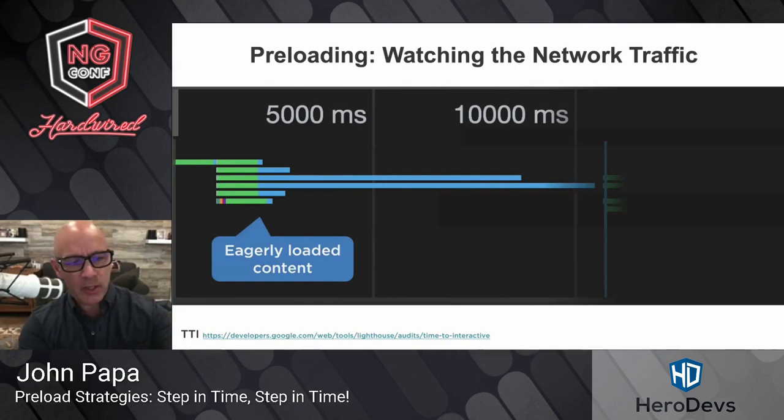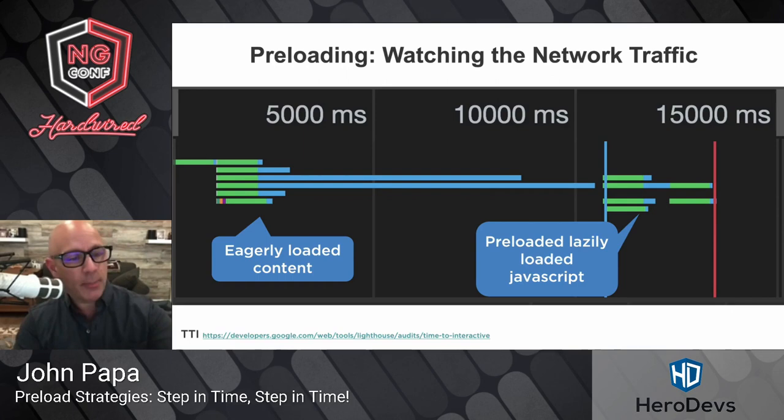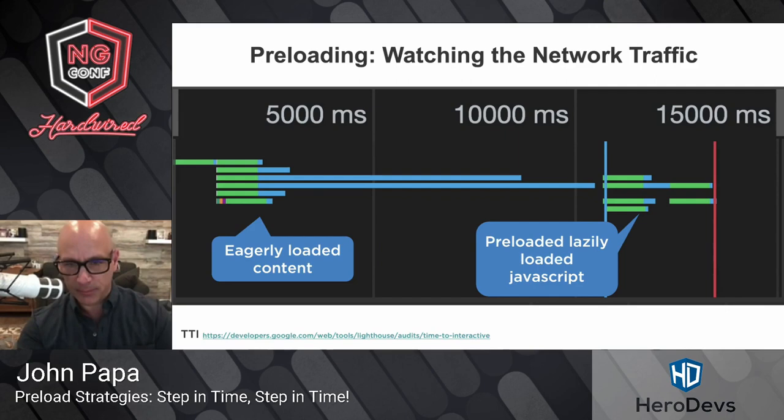So how does preloading work? Eagerly loaded content comes up front, but after some time on a network, you're going to see the preloaded lazy-loaded JavaScript come later. The main application loads up front, and after about 10 seconds or so, the application is usable — that's the time to first interactive. And then the preloaded JavaScript comes afterwards, meaning your users can get the site quickly up front, use it, and then go to other routes. By the time they go to another route, all that code is already preloaded.